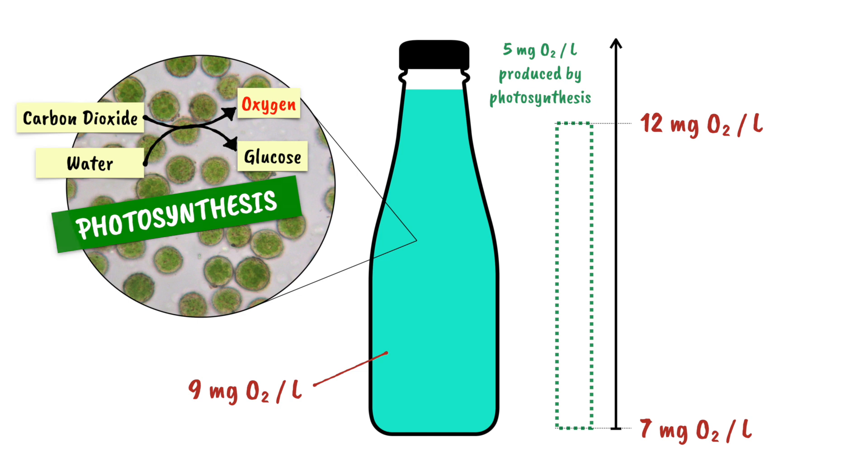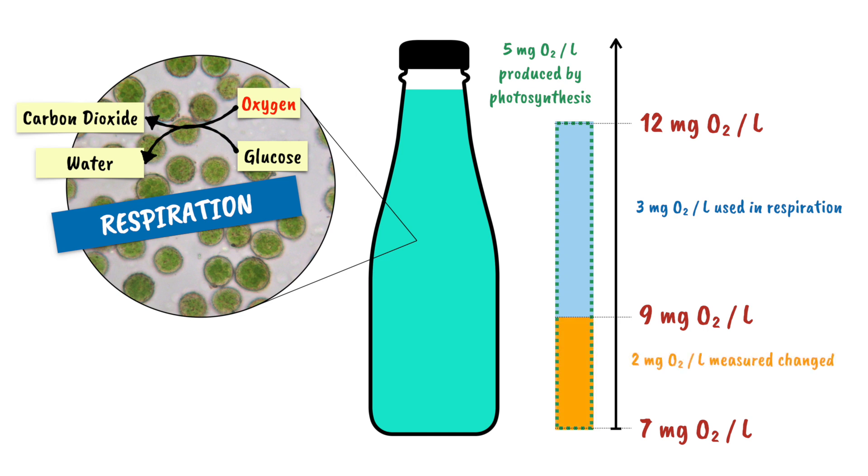This is because the phytoplankton also carry out respiration with some of the oxygen. Here, we assume that 3 mg of oxygen per litre has been used in respiration. The measured change in oxygen level over time, in this case 2 mg per litre, is proportional to the rate of biomass stored by phytoplankton, or in other words, the net primary productivity.